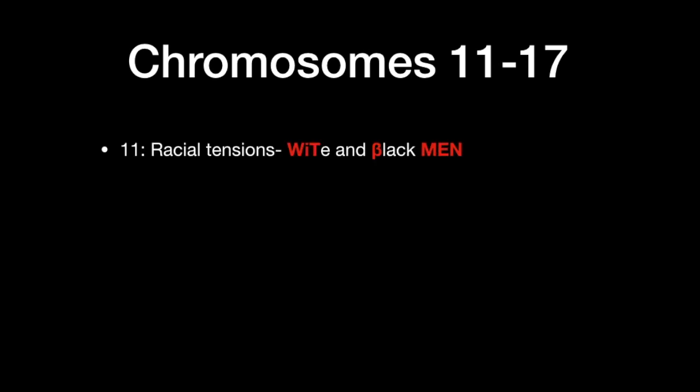Next, I'll be going over a series of mnemonics for disorders on chromosomes 11 to 17. These ones were harder to think of, so they might not be as creative, but they're still useful. For chromosome 11, we'll talk about racial tensions — fought between white men and black men. If you hold up two middle fingers it makes the number 11, so imagine a group of white and black men holding up their two middle fingers at each other — that helps you remember chromosome number 11.